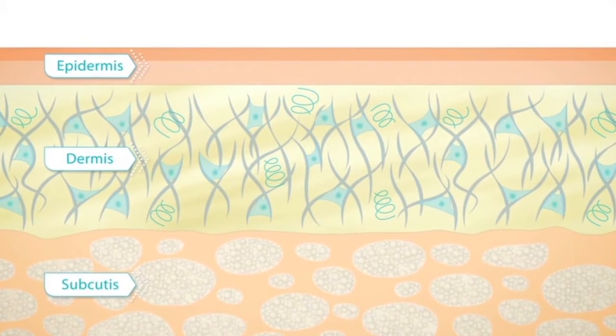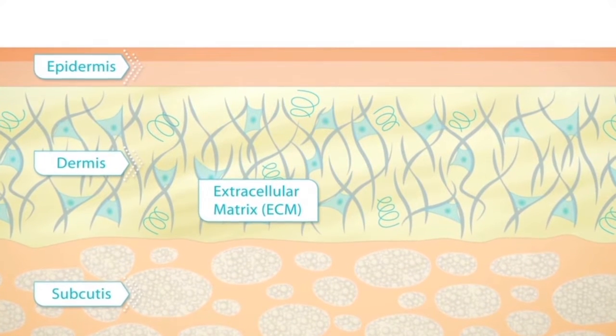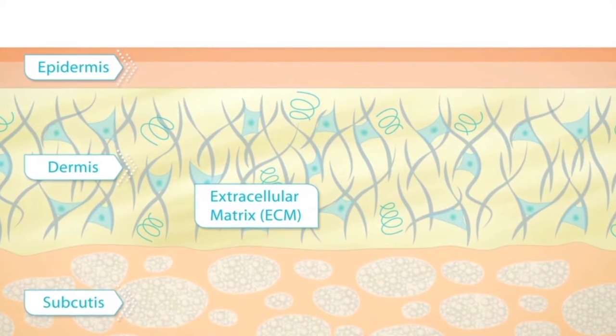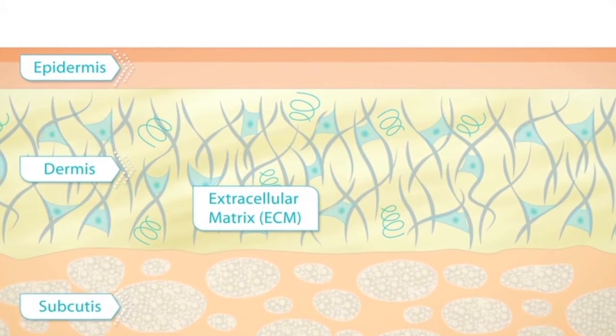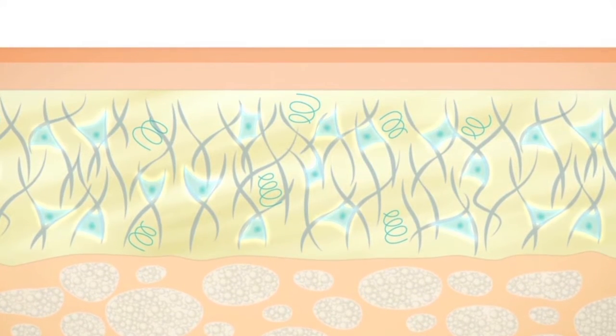The structure of the skin is supported by the extracellular matrix, or ECM for short, which gives the skin its unique elasticity and tensile strength. The ECM is a complex scaffold composed of proteins and fibers, mainly produced by fibroblasts.